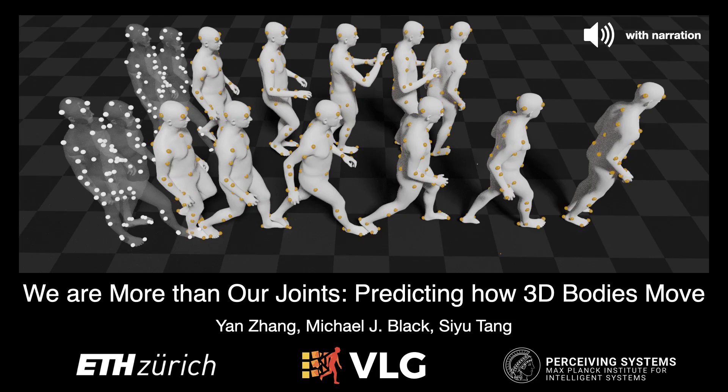We present a new approach for predicting 3D human motion. In contrast to prior work, we observe that our movement is about more than our joints, hence we call our method MOJO for short.